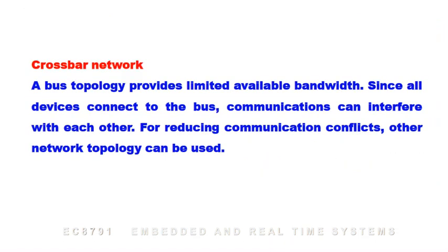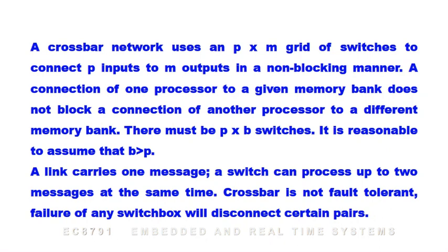A crossbar network: a bus topology provides limited available bandwidth since all devices share the bus and communications can interfere with each other. To reduce communication conflicts, other network topologies can be used. A crossbar network uses a P×M grid of switches to connect P inputs to M outputs in a non-blocking manner — a connection from one processor to a given memory bank does not block a connection from another processor to a different memory bank. There must be P×M switches. A link carries one message, and a switch can process up to two messages at the same time. However, crossbar is not fault-tolerant; failure of any switch box will disconnect certain pairs.